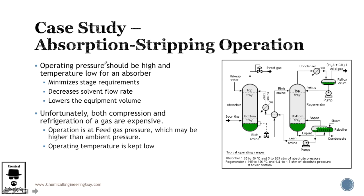These are the conditions. Operating pressure should be high, this is theory, and the temperature should be low in order to maximize the absorption. This will minimize the stage requirements. We're going to see that later on, how stages are related to temperature, pressure, and to the binary system interaction. It also decreases the solvent flow rate, meaning that we need or we might need less liquid. And also lowers the total size of equipment, which is achieved by the diameter and height.